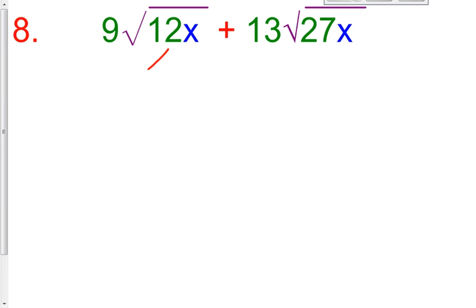12 is the same thing as 4 times 3, and then you still have this x underneath the radical. And this 27 is the same thing as 9 times 3 multiplied by x. So, we still have our 13 on the outside and our 9.